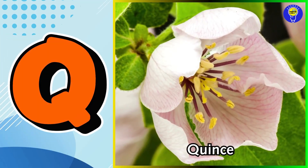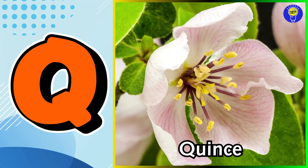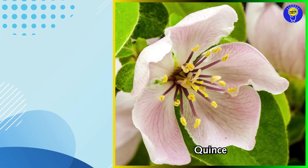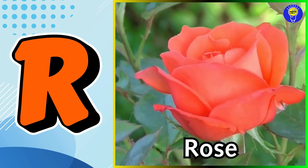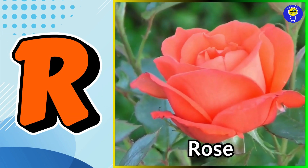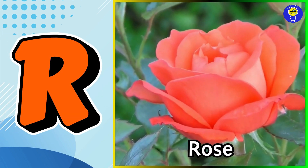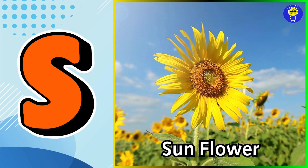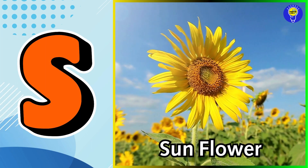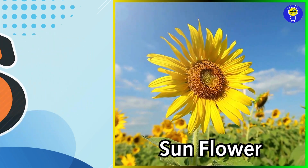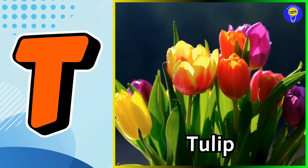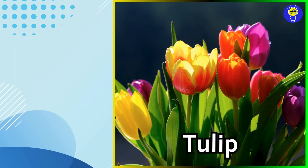Q is for quince flower. R is for rose flower. S is for sunflower. T is for tulip flower.